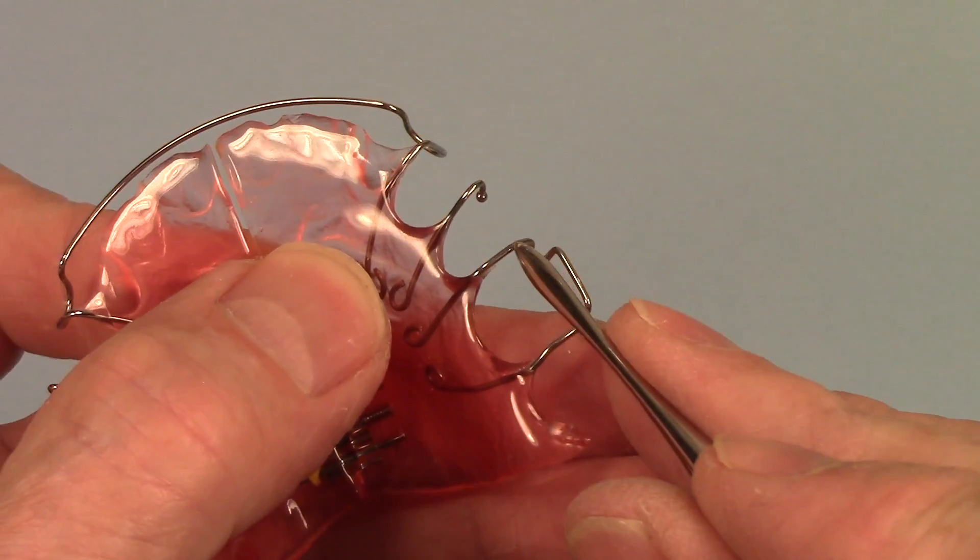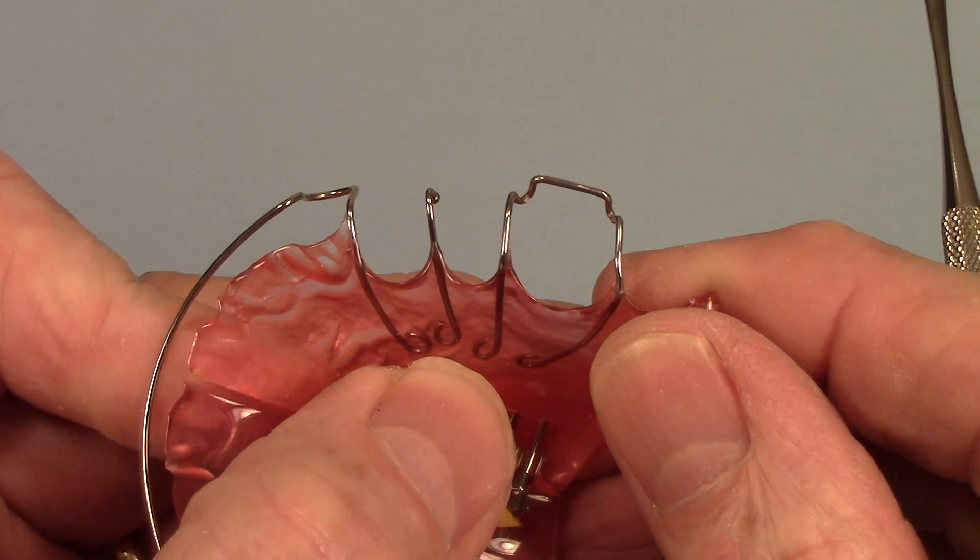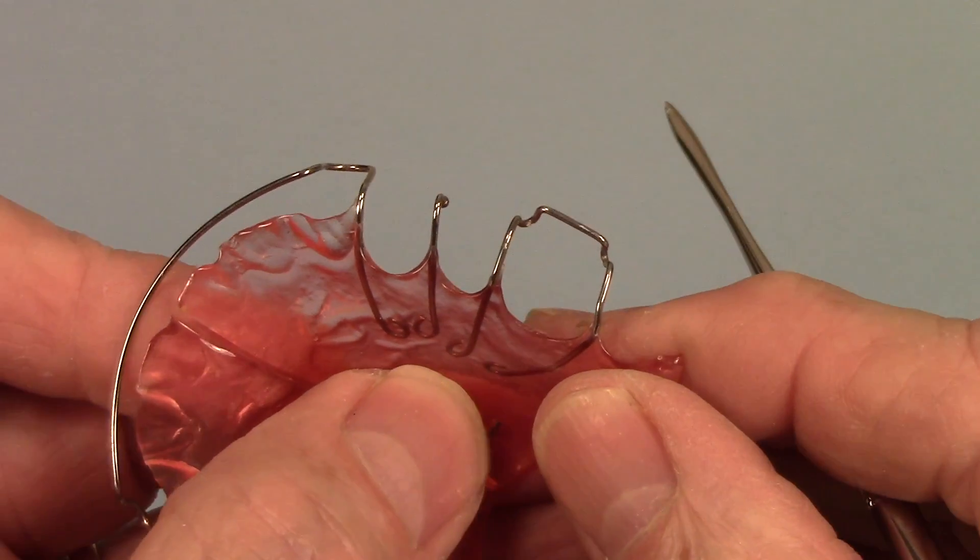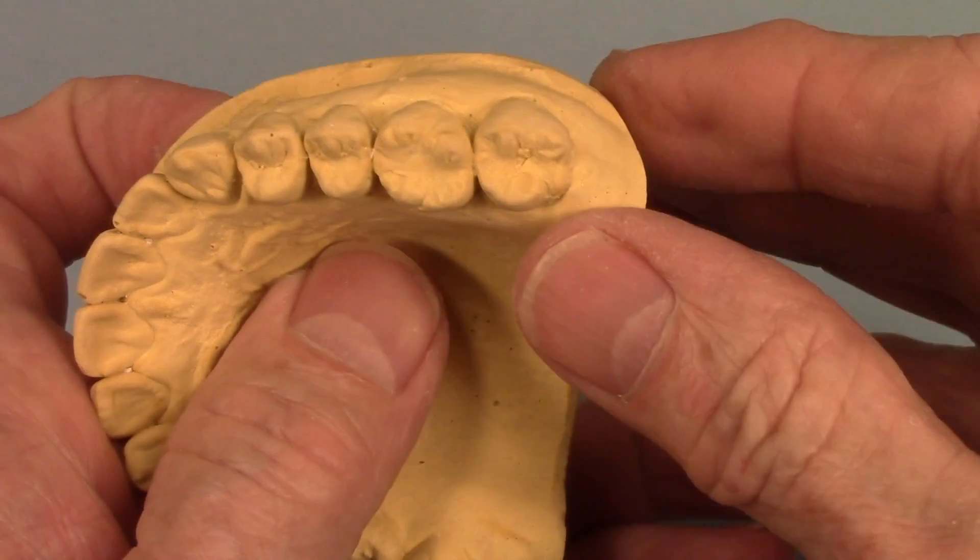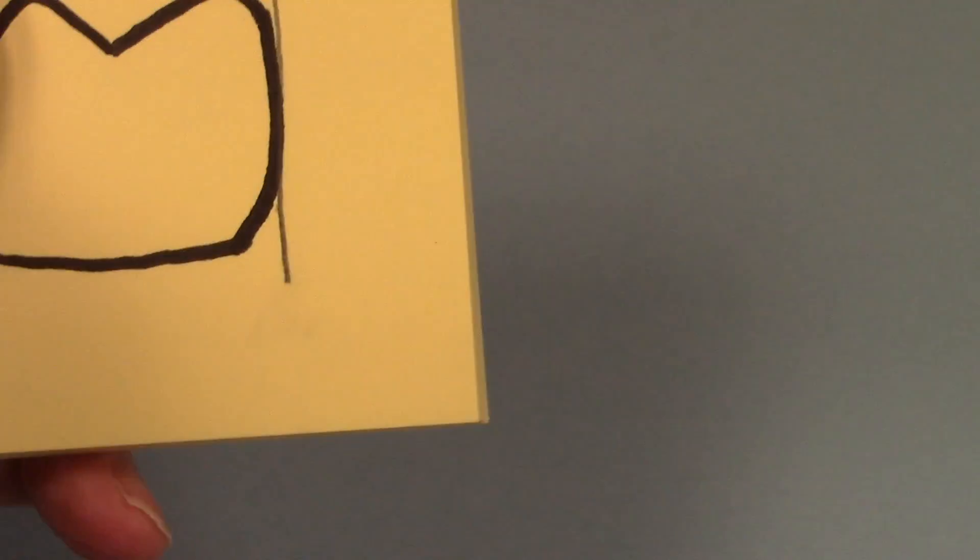The Adams clasp also crosses the occlusal twice on either side of whatever molar it's on which is a bit of a disadvantage because there's more opportunity to bite on a wire. So the Adams clasp fits into the undercut. Here's the model and we'll fit that on in a minute but first let's talk about what undercut is.